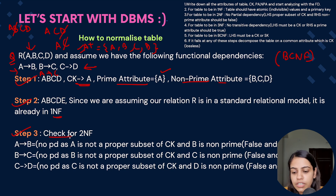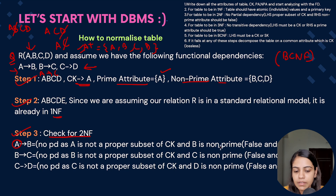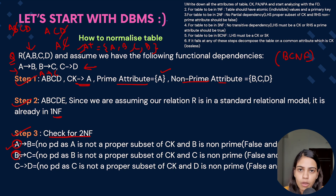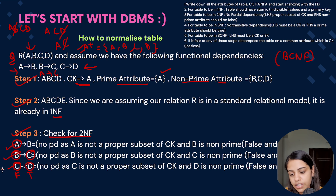Now step 3: check for second normal form by checking if there is any partial dependency. For A determines B: A is already a candidate key and the proper subset of the candidate key is empty (∅), so there is no partial dependency — false AND true = false. For B determines C: B is not a proper subset of the candidate key, so LHS condition is false; false AND true = false. For C determines D: C is also not a proper subset of the candidate key — false AND true = false. No functional dependency has partial dependency, so the given relation is in second normal form.